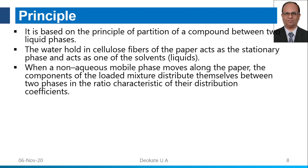The nature of the stationary and mobile phases is important. The stationary phase is polar whereas the mobile phase is non-polar. There are two types of chromatography technique: normal phase chromatography, which uses a polar stationary phase and non-polar mobile phase, and reverse phase chromatography. Paper chromatography is a normal phase chromatography.